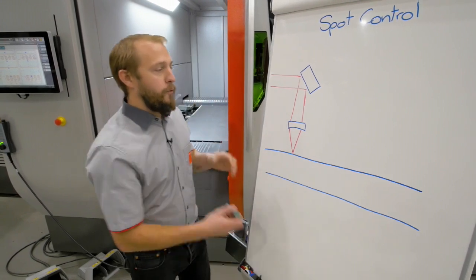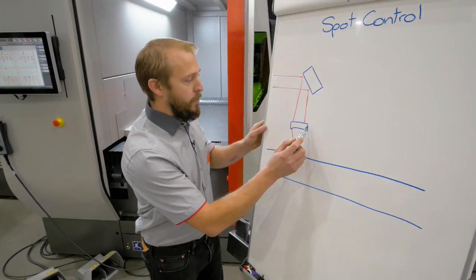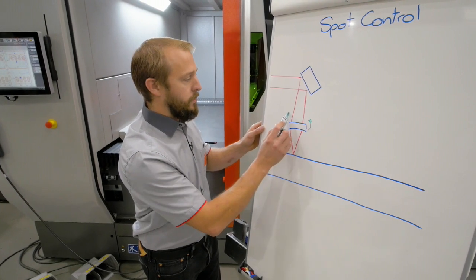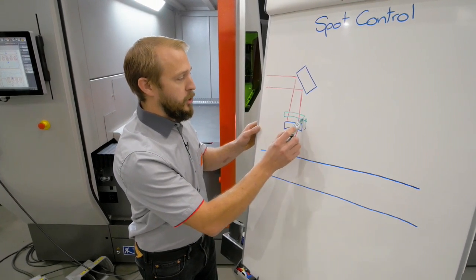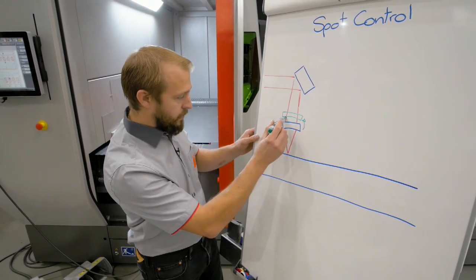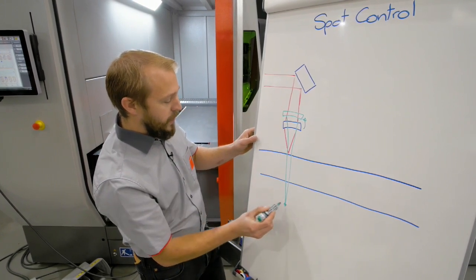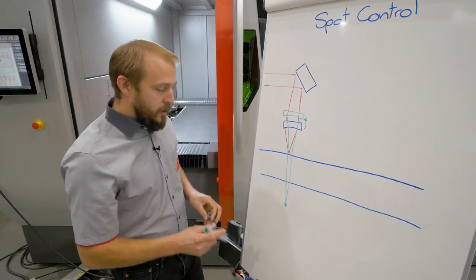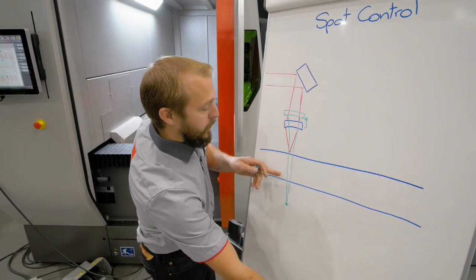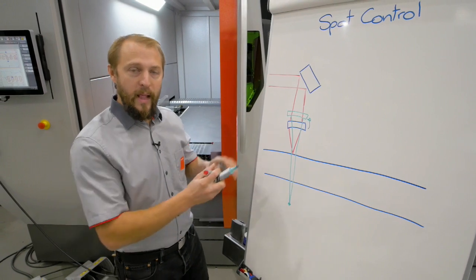So if I move my lens here up, I change the color so it's better visible, my focal spot is moving a lot down. So there is a big difference between those two focal lengths.